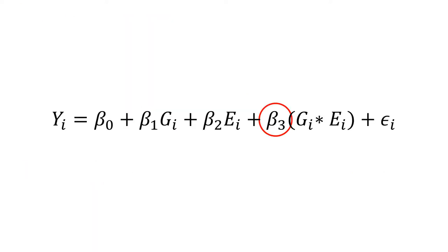So in G by E research we're interested really in beta 3 here. We have beta 1, a genetic effect, beta 2, an environmental effect, and then beta 3 is an interaction term. So does the effect of genes, is it modified by some environment?